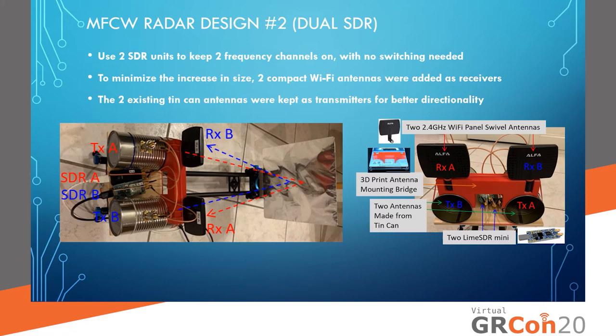The solution came in my second design: a dual SDR design. I have two SDRs, one on each of the two frequency channels, so neither SDR has to switch. To minimize the increase in size, instead of adding two more can antennas, I added two compact Wi-Fi antennas. The can antennas are the transmitters and the Wi-Fi antennas are the receivers. In order to separate all the antennas from each other to avoid coupling, I 3D printed a mounting bridge to keep the antennas further apart.